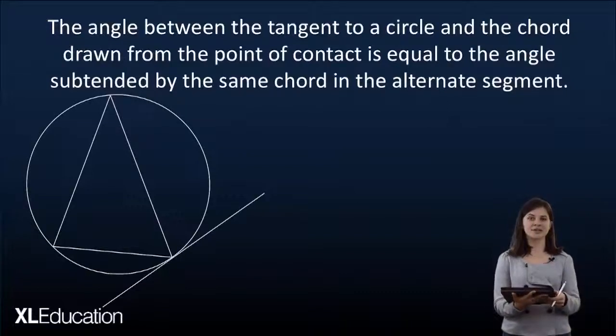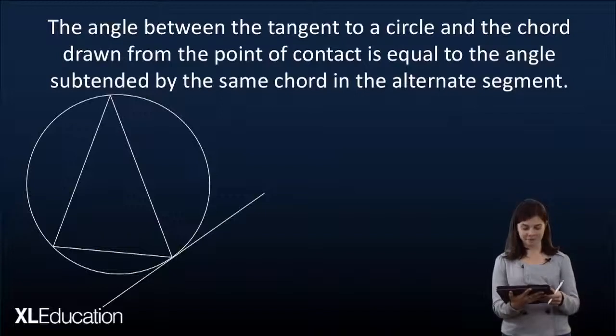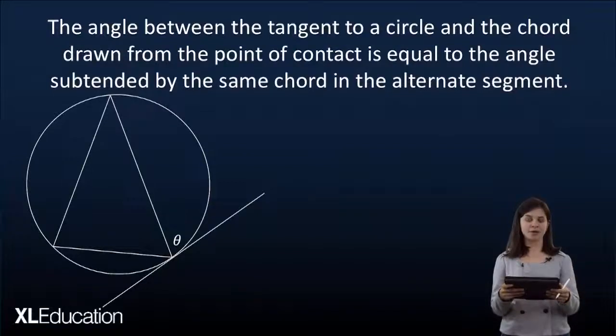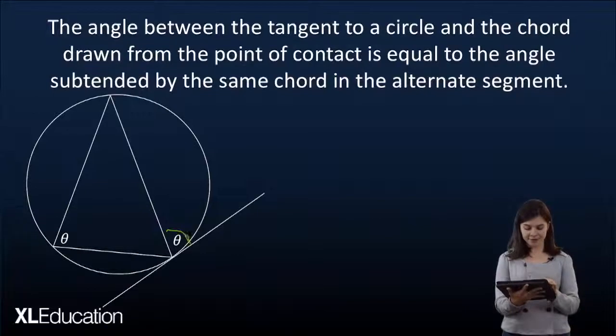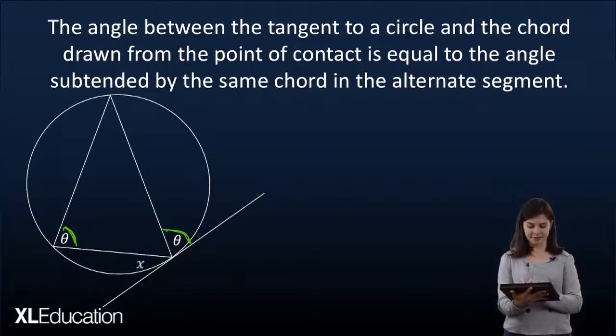So the first theorem is the tan-chord theorem. Basically, the angle between the tangent to a circle and the chord drawn from the point of contact is equal to the angle in the opposite segment. As you can see here we have theta equal to this theta in the opposite segment over there, and the same is going to apply for x.